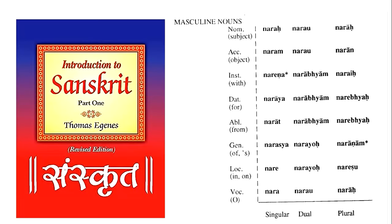Moving on to the plural: the nominative plural is 'hoi potamoi,' comparable to long -i in Latin. The genitive plural is 'ton potamon,' comparable to the -orum form in Latin. The plural dative is 'tois potamois,' comparable to the -is form in Latin. And the plural accusative is 'tous potamous,' comparable to the -os form in Latin.